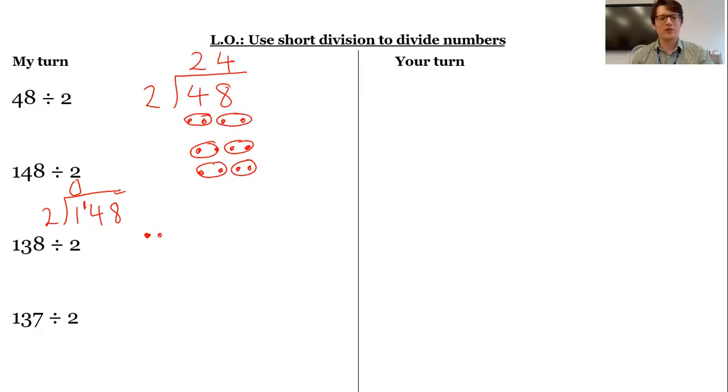So now we can draw 14. One, two, three, four, five, six, seven, eight, nine, 10, 11, 12, 13, 14. Now I already know it's going to divide exactly by two because I know 14 is an even number. So there's one, two, three, four, five, six, seven lots of two in 14. 14 divided by two is seven. Two times seven is 14.